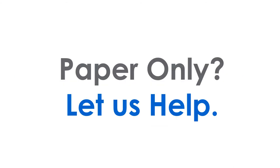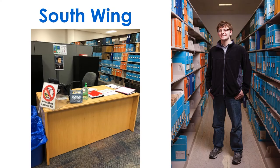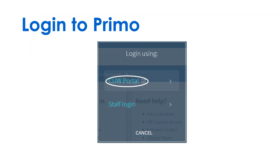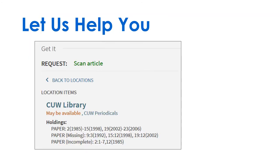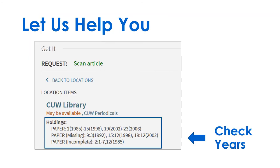We can help locate the paper copy if the electronic version doesn't have the years you need. Stop by the South Wing desk, log in to Primo, and submit a scan request for any paper copies we have.